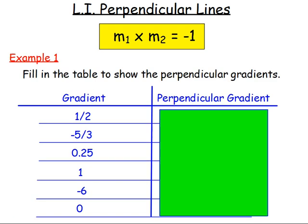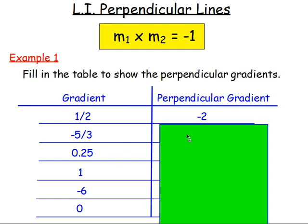Some examples with that. Example one: fill in the table and show the perpendicular gradients. If you've got a gradient of one half, turn it upside down and change the sign. One over two becomes two over one, which is just two, and you change the sign, so you get negative two.